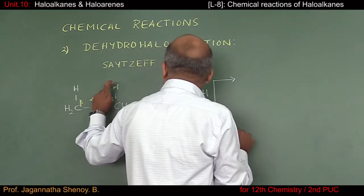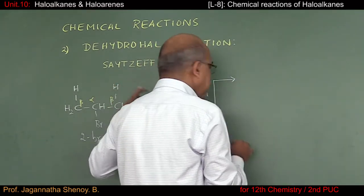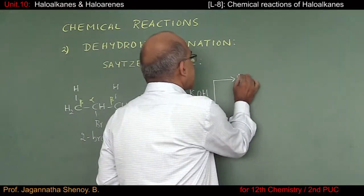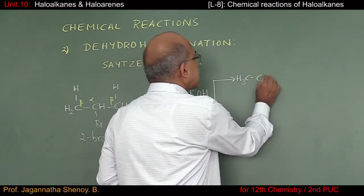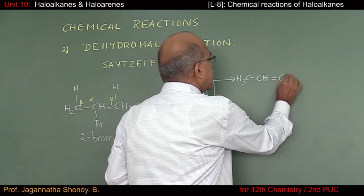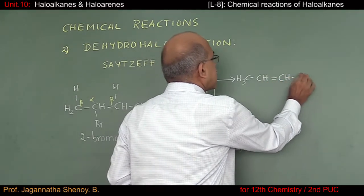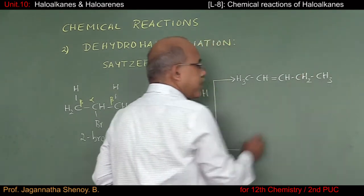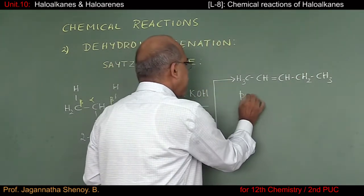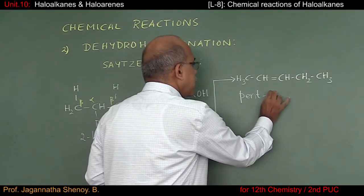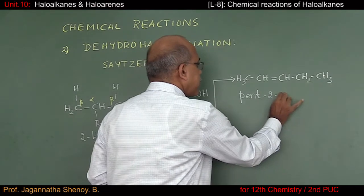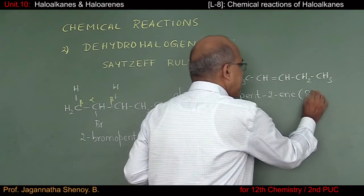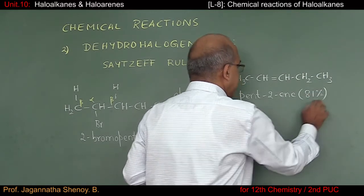In the first case, I assume that hydrogen is removed from the beta carbon atom adjacent to C1. The product obtained is CH3-CH=CH-CH2CH3, which is pent-2-ene, and the yield obtained is found to be 81%.